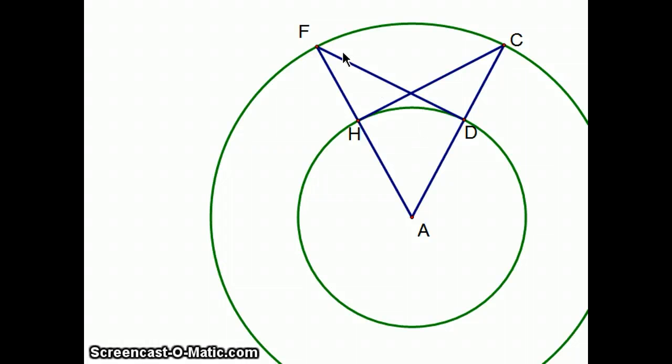So, triangle FAD is congruent to triangle CHA. And by corresponding parts of congruent triangles, we also know that angle FDA is congruent to angle AHC.